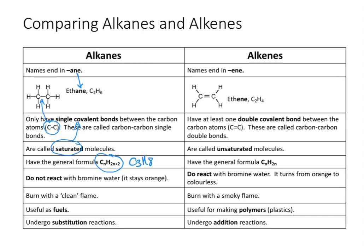The last property of alkanes is that they undergo what is called substitution reactions. In order to react with anything, one or more of the hydrogens have to be substituted for other elements such as bromine or chlorine.